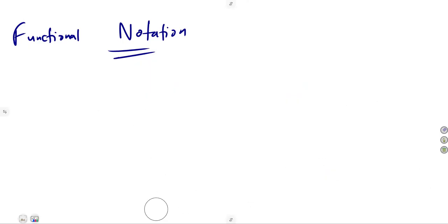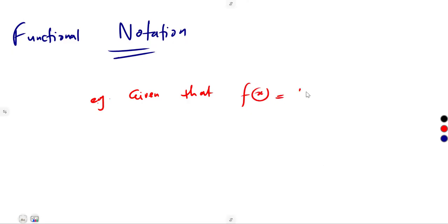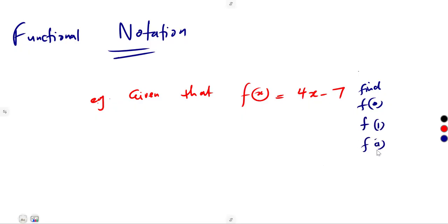Let us consider one or two examples on functional notation, then we shall look into inverse functions and relations in our next class. Given a function f of x equals 4x minus 7, we are asked to find f of 0, f of 1, f of a, and f of a minus 3. They can give you any expression. In place of x you put whatever is inside the bracket of f.